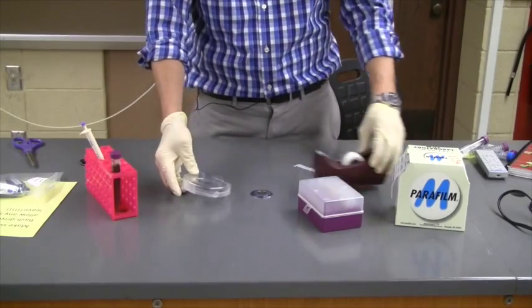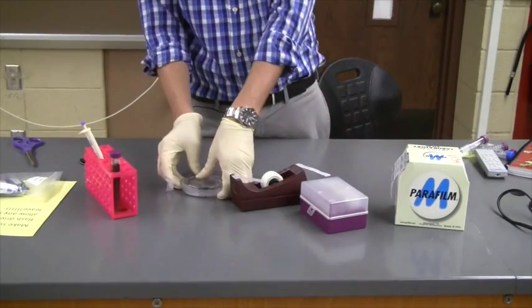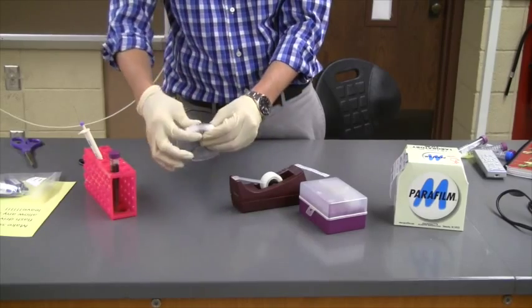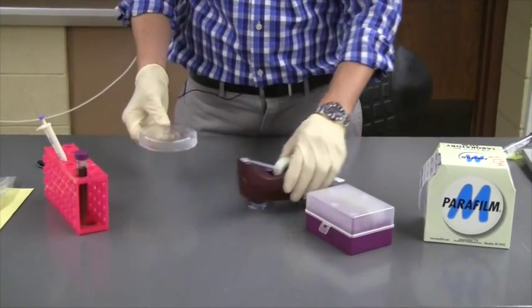If we don't have parafilm for some reason, you can always just take a couple pieces of scotch tape and stick them on the side like that. Do that a couple more times and seal it up that way.